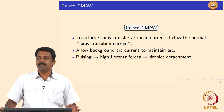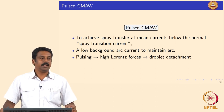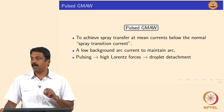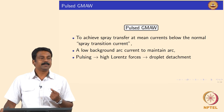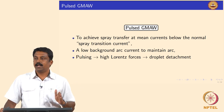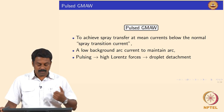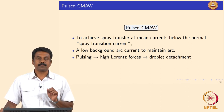The objective of pulsed GMAW is to achieve spray transfer at mean currents much lower than the spray transition current used in constant current GMAW. We maintain a small background current IB to keep the arc alive; otherwise, high-frequency ignition would be needed. During pulsing, current is increased much higher than the spray transition current to melt the tip and transfer the droplet by increased Lorentz force.